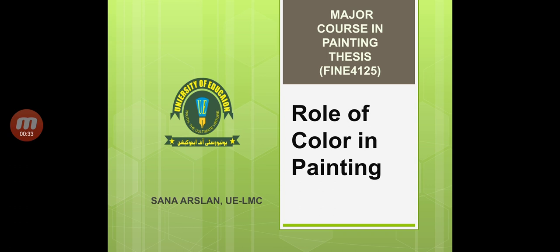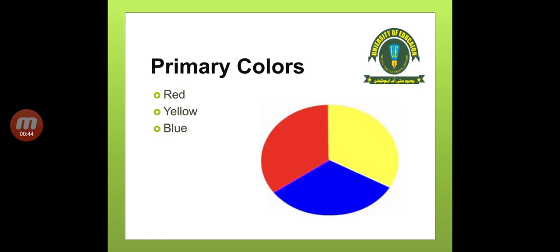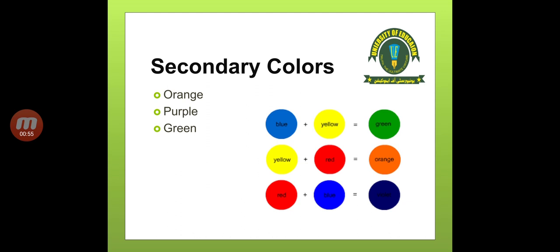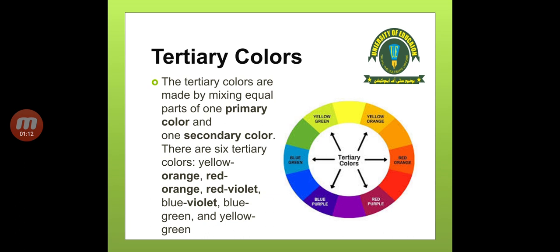So how color will be used, what will be explained, and what role it will play — we will start from primary colors. The basic three colors are red, yellow, and blue. These three colors cannot be made by mixing any other colors, but by mixing them, more new colors can be created. After primary, we get secondary colors, which are made by mixing primary colors together — blue plus yellow equals green, yellow and red gives orange.